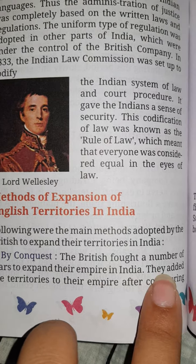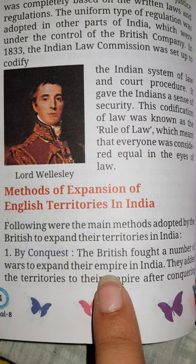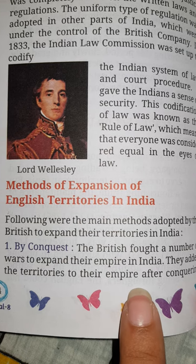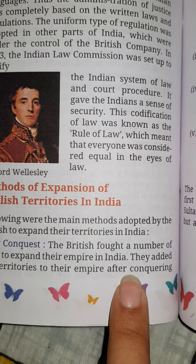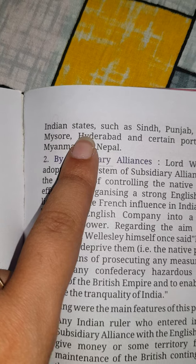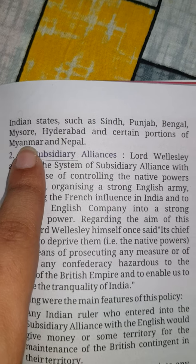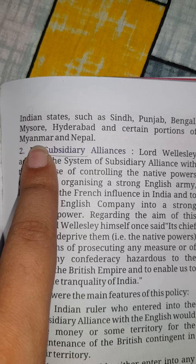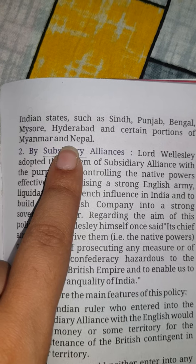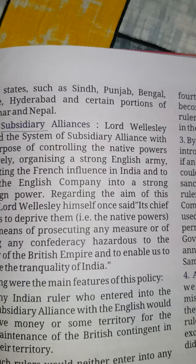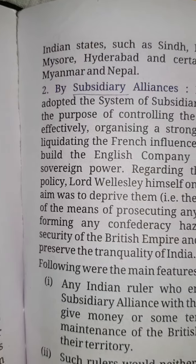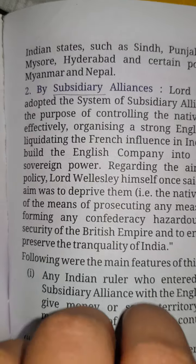The British fought a number of wars to expand their empire in India. They added territories to their empire after conquering Indian states such as Sindh, Punjab, Bengal, Mysore, Hyderabad, and certain portions of Myanmar and Nepal. By fighting and conquering these regions in war, they expanded their empire in India.